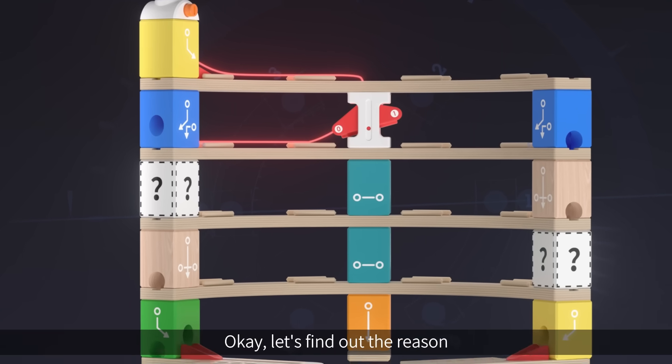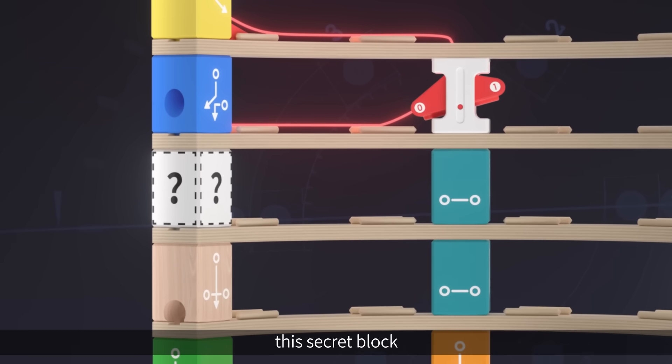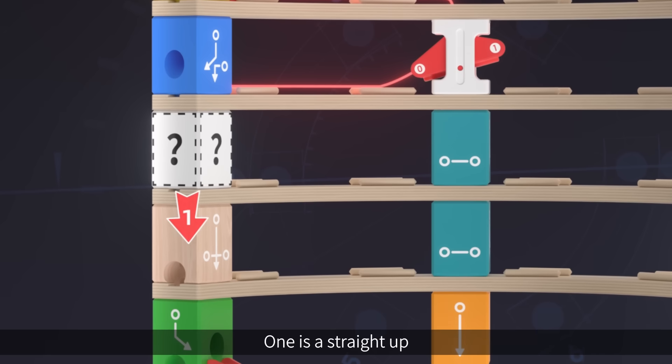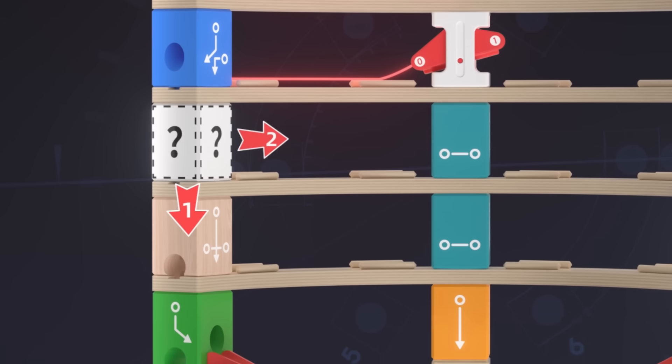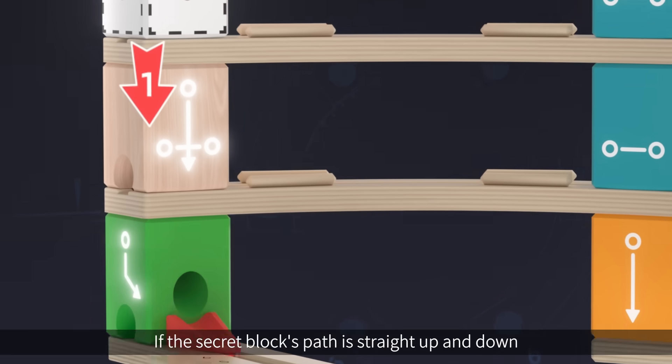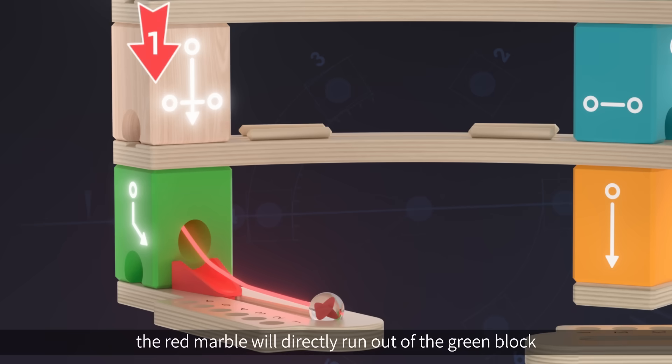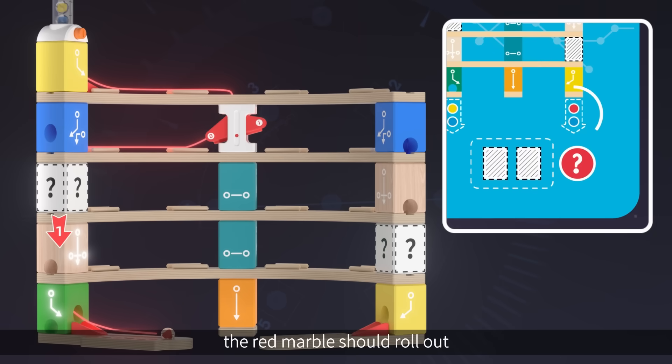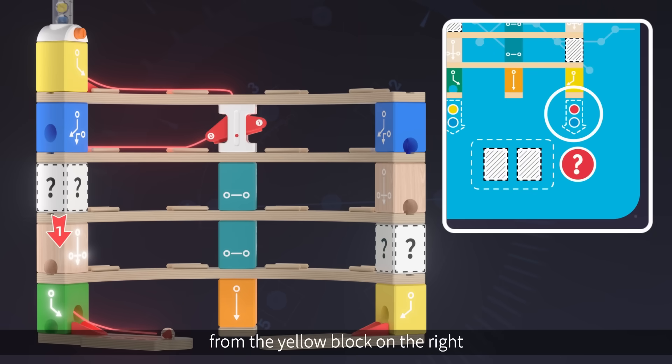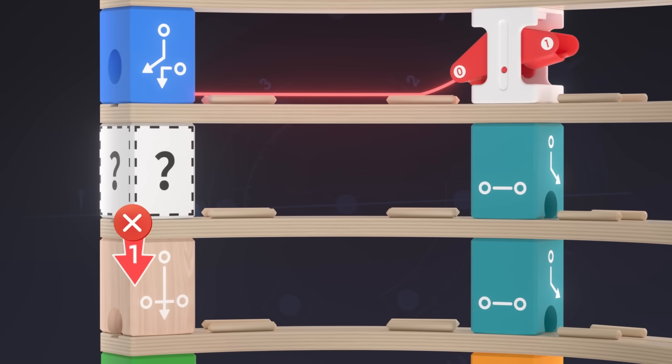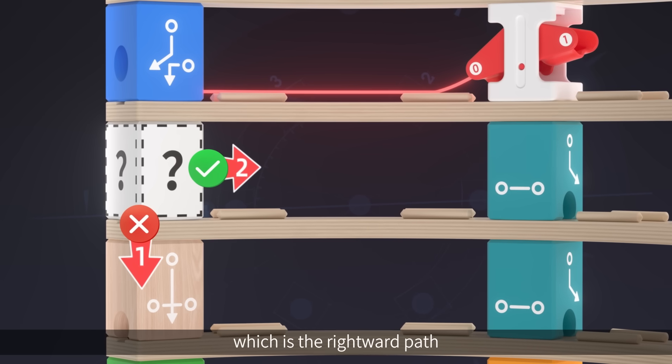Okay, let's find out the reason. First of all, this secret block only has two paths with different directions: one is straight up and the other is rightward. Let's look at the first direction first, the straight path. If the secret block's path is straight up and down, the red marble will directly run out of the green block. However, according to the requirement, the red marble should roll out from the yellow block on the right. So in this situation, the first option does not work. Then it only has the other option, which is the rightward path.